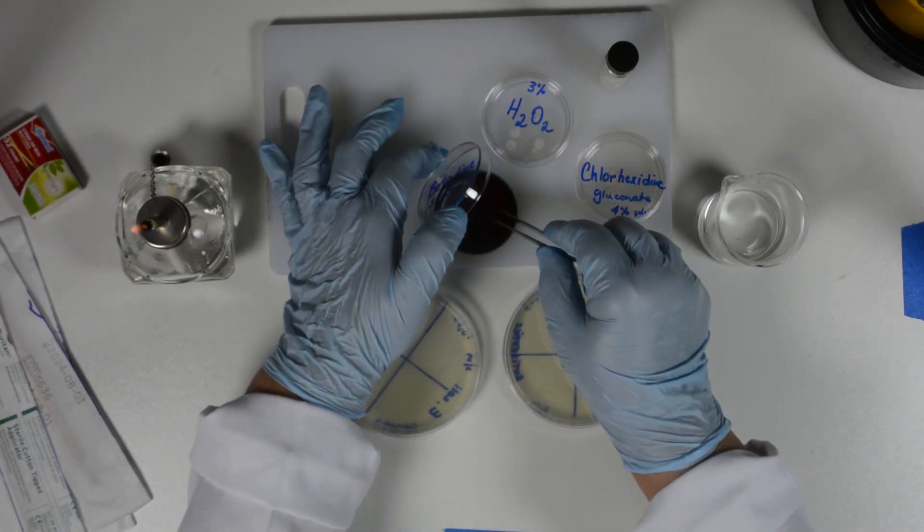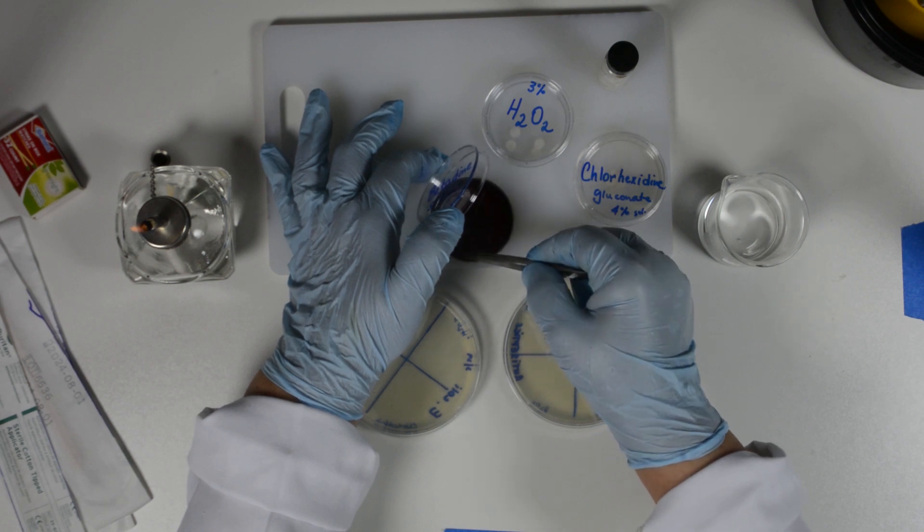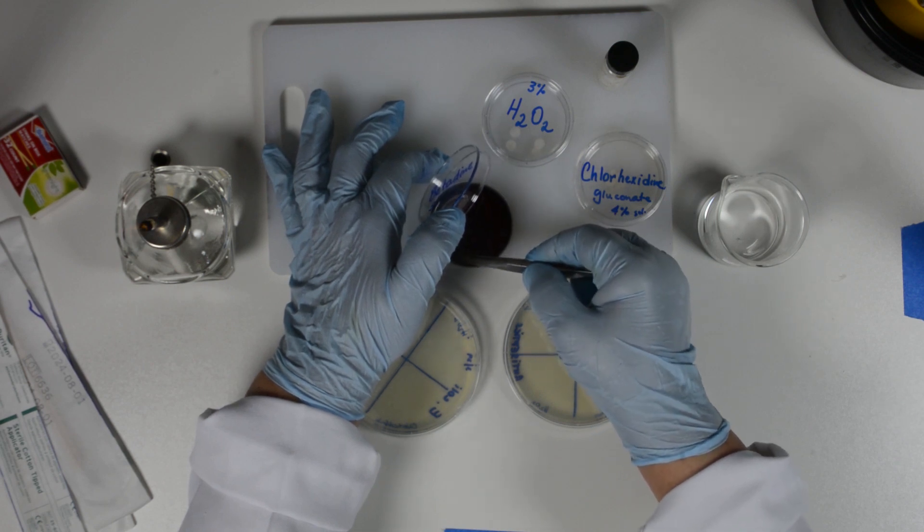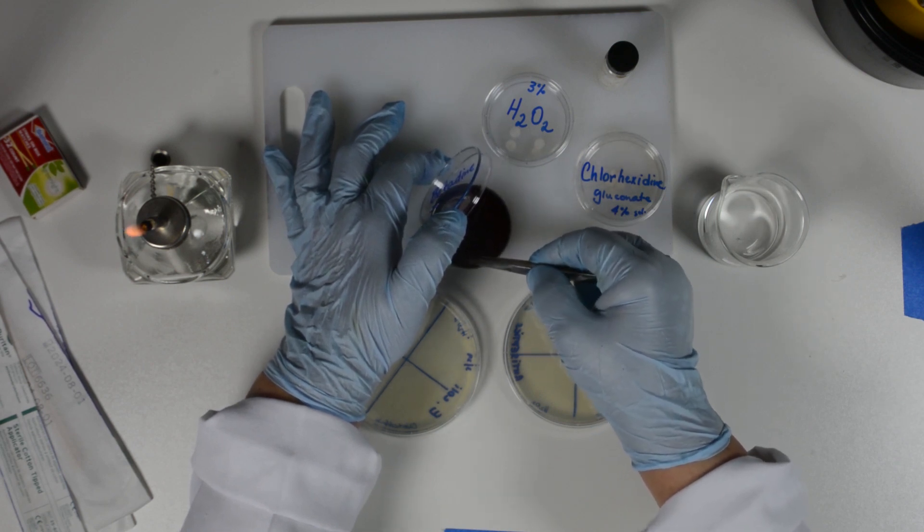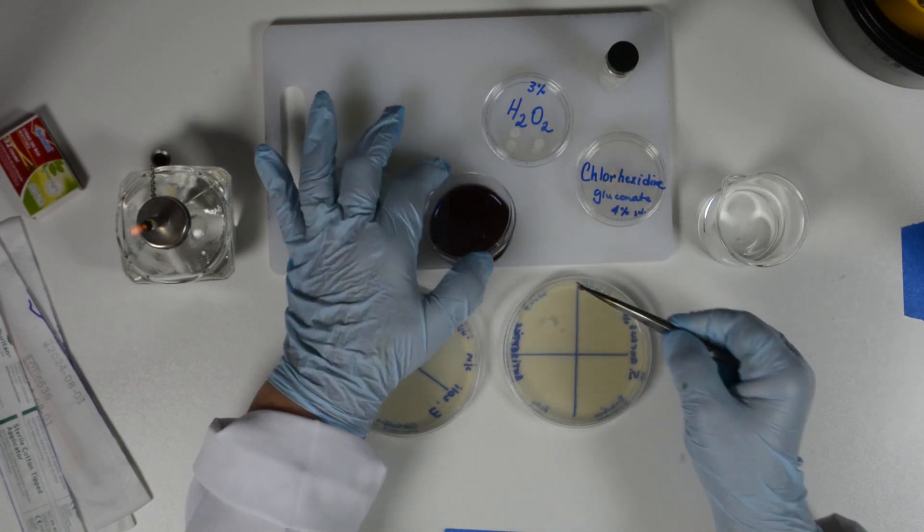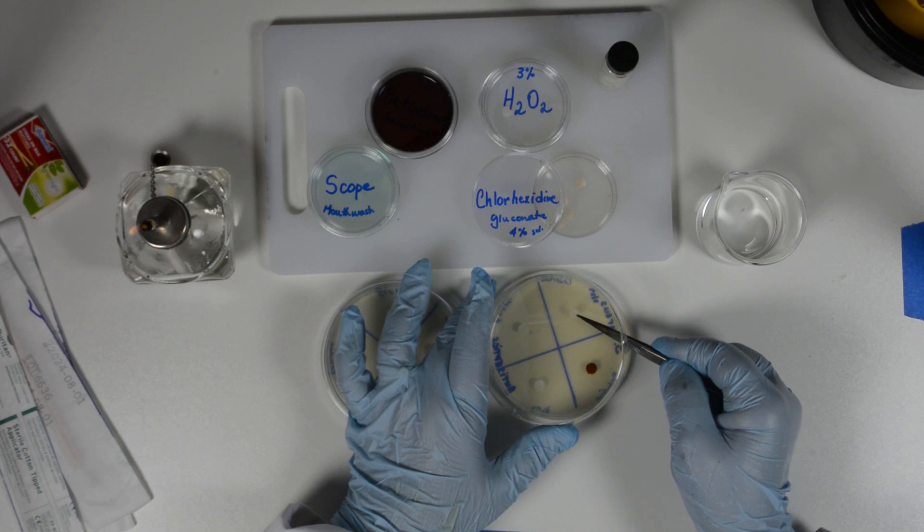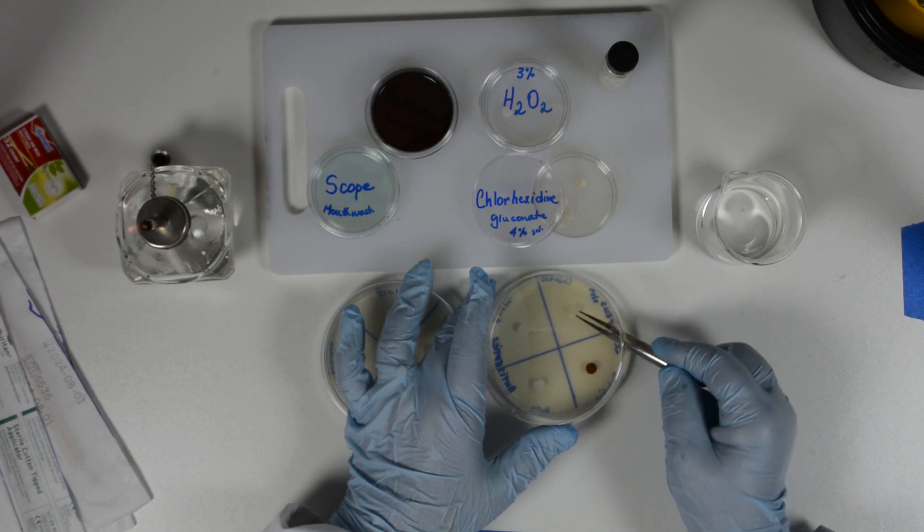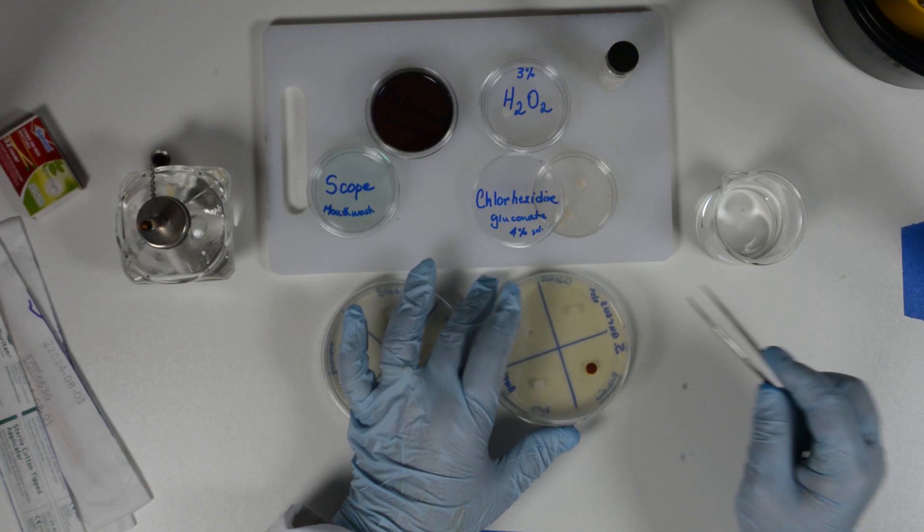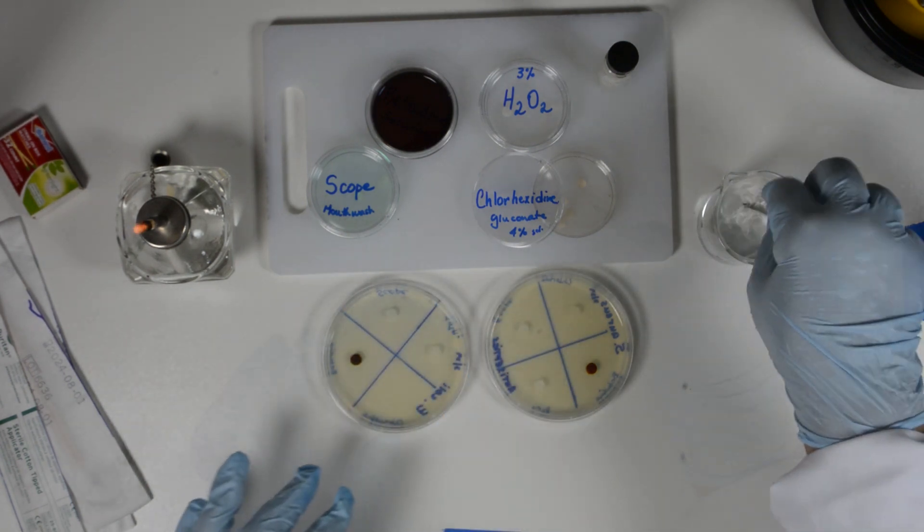One of the blank discs soaked with the chemical was picked up using the tweezers. The disc was then touched on the side of the plate to drain excess liquid. We open the plate with the prepared lawn, just enough for the tweezers to fit in, and gently place the impregnated disc in the middle of the already labeled quadrant.